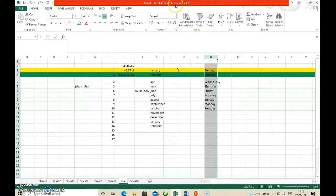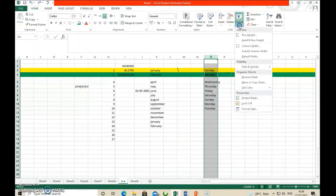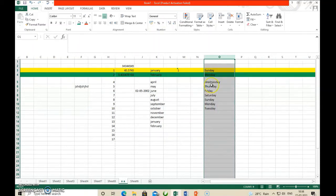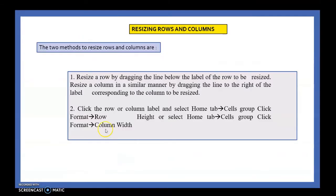Same thing we can do with the Cell group also. Click Format, then Column Width. The present column width is 8.43. Suppose you enter 20, the column width becomes 20. This way you can resize row and column. Resize row by dragging the line below the label of the row. Resize a column by dragging the line to the right of the column label. Or select the row/column label, go to Home tab Cell group, click Format, then Row Height or Column Width.